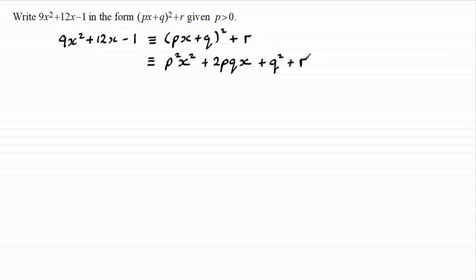And then the next thing I need to do is start to compare coefficients. We'll start with comparing coefficients of x squared. In other words, I'm looking at that 9 here and comparing it with the p squared here. So what I've got then is p squared must equal the 9. And from this it follows then that p must be equal to the square root of 9.